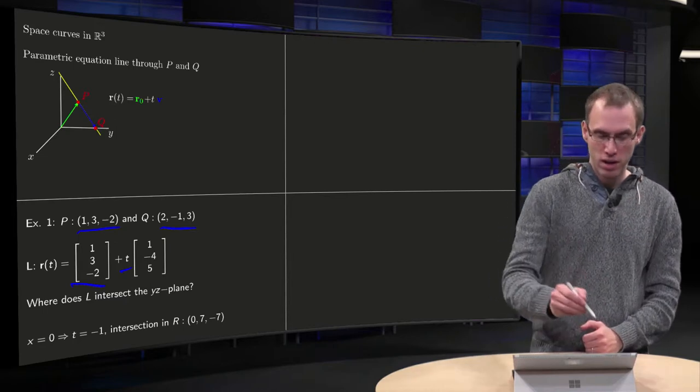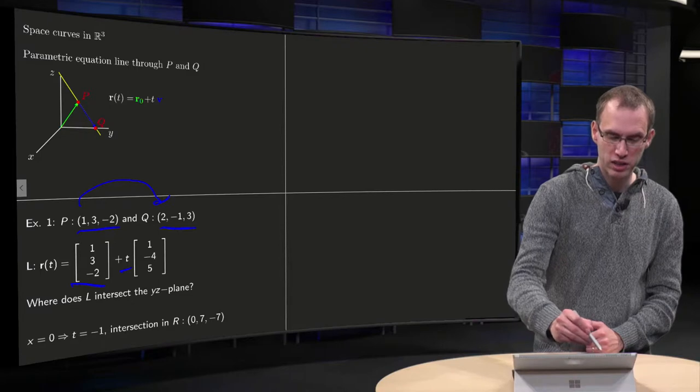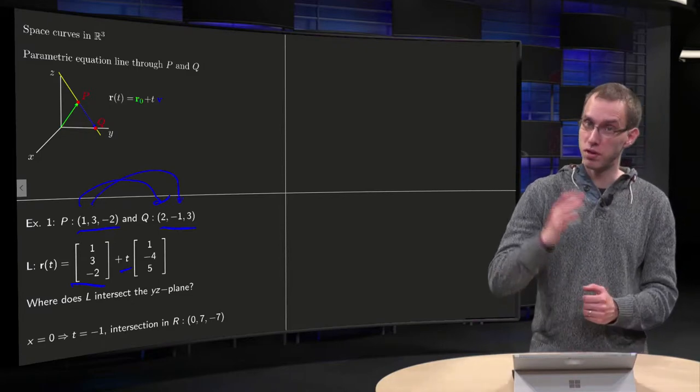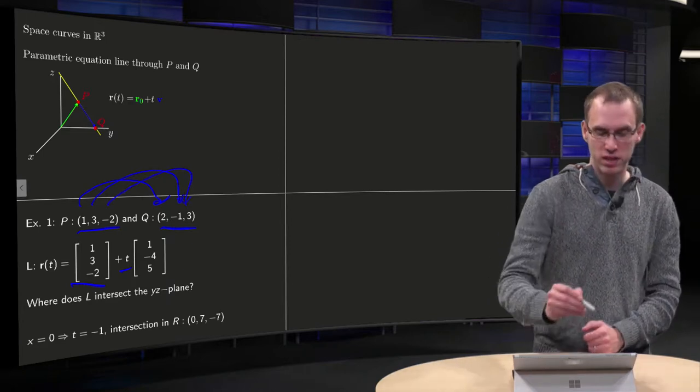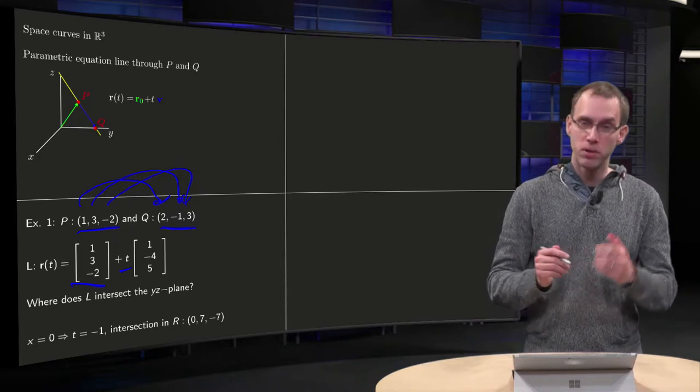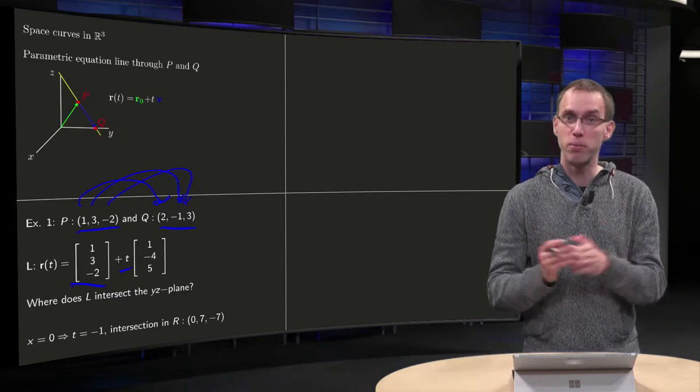And for v we can take the vector from p to q. So what is the vector from p to q? If I want to go from p to q I have to go one step in the x direction, I have to go minus four steps in the y direction, because we go from 3 to minus 1, and we have to take five steps in the z direction, so we get (1, -4, 5). So there we have already the parametric equation of our line through p and q.